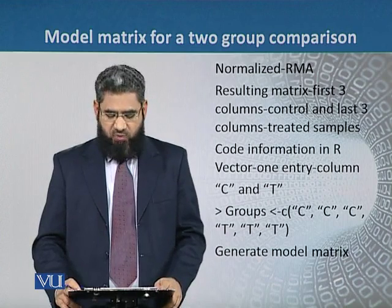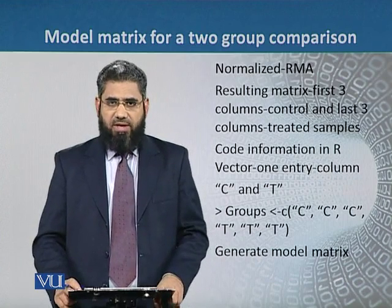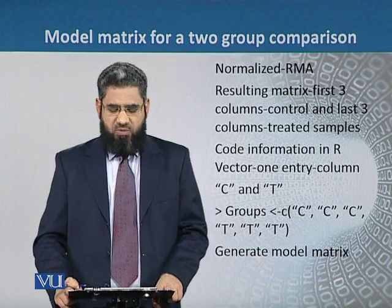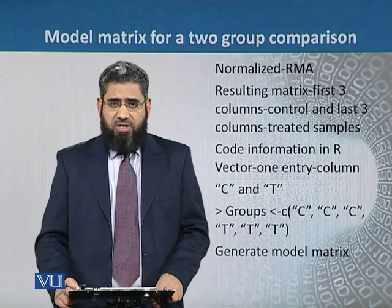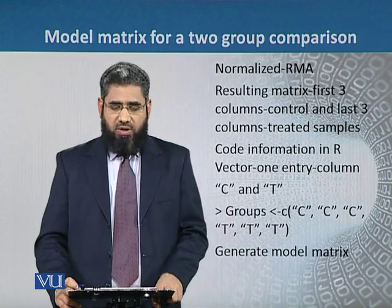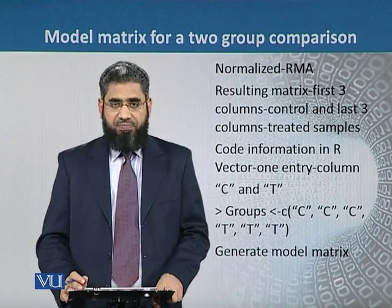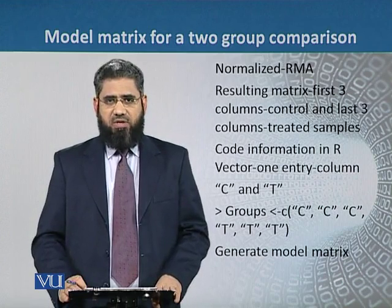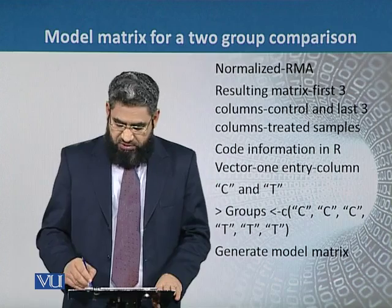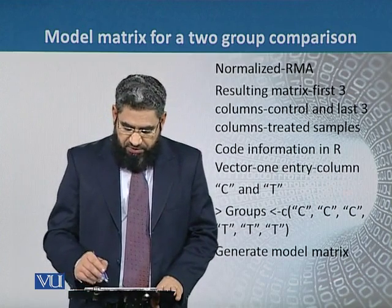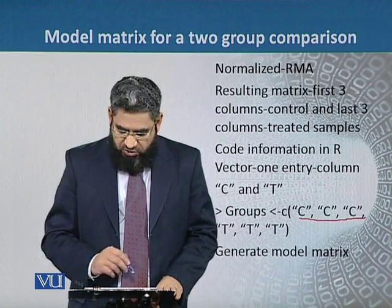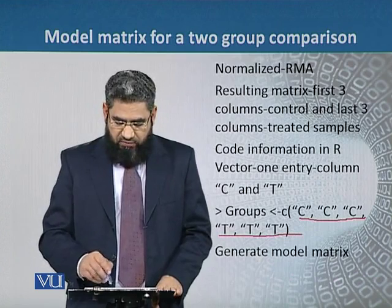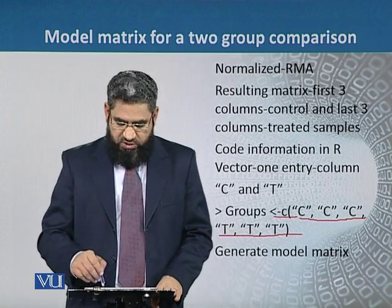After obtaining these six columns, we have to do the coding in R. The easiest way is to produce a vector with one entry at a time for each column. Because we have six columns, we use the codes C and T, where C denotes control and T denotes treated samples. Since we have three control and three treated samples, we use CCC and TTT, and we use the command 'groups' for this coding.